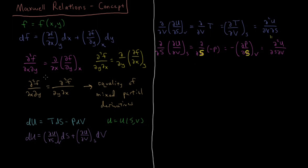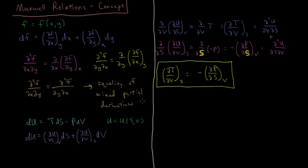Due to all of what we've written, (dT/dV) at constant S must equal −(dP/dS) at constant V. This is called the Maxwell relation for internal energy. Internal energy is a function of S and V; if you take the mixed partial derivatives and express them in terms of state variables like temperature, pressure, volume, and entropy, you get this equation: the derivative of temperature with respect to volume equals the negative of the derivative of pressure with respect to entropy. We can use these relations in situations where one derivative looks complicated, like dP/dS, and substitute it for another which looks less complicated, like dT/dV.